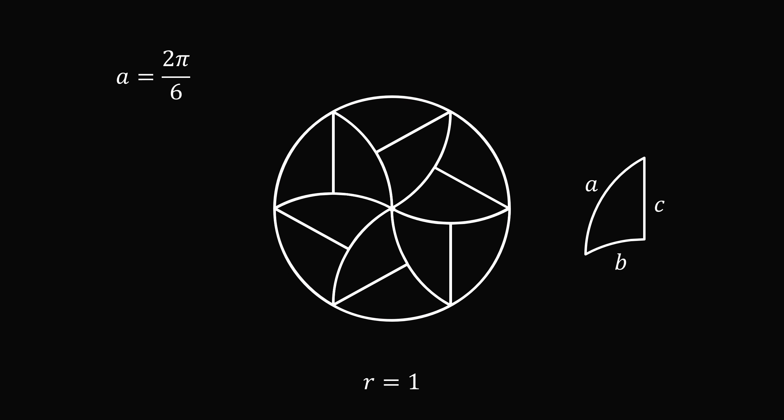Now focus on the following arc. Its length is equal to a, but it's also equal to b plus b. Therefore, b is equal to a over 2, which is equal to π over 6.